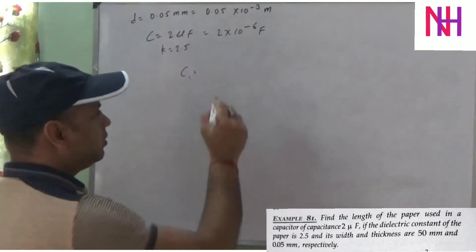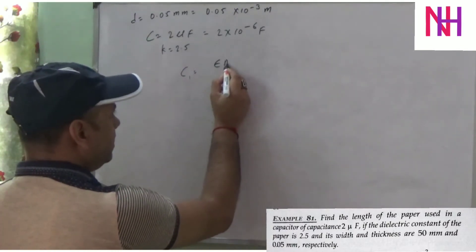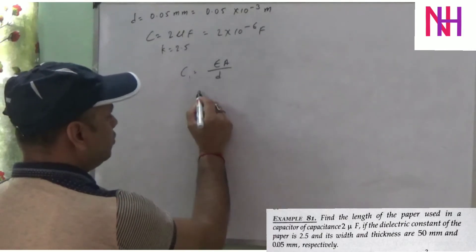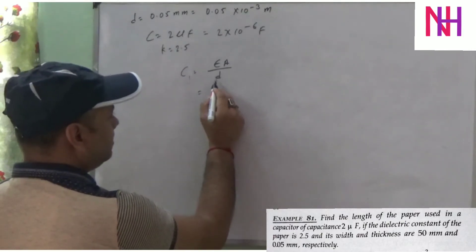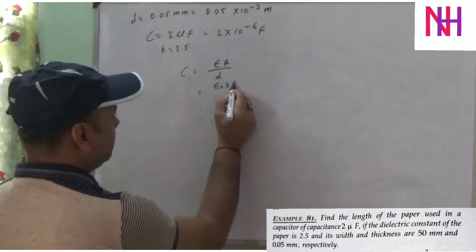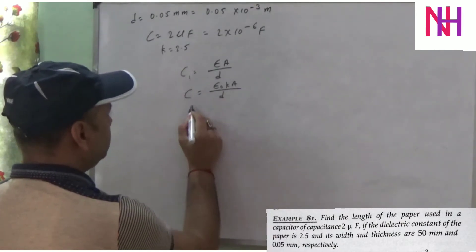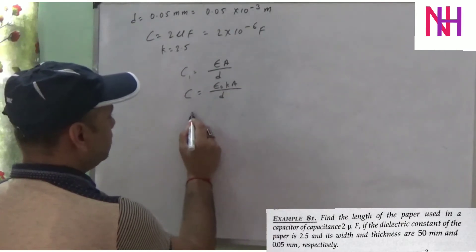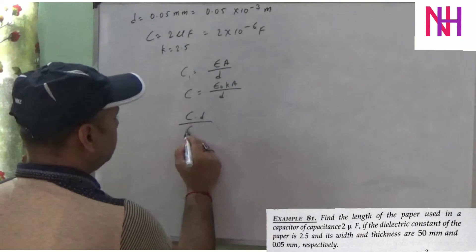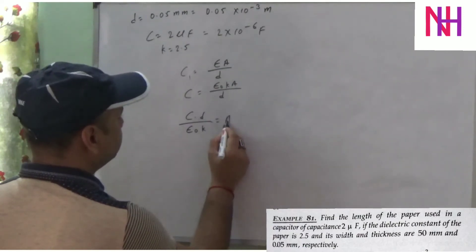The formula is C = ε₀k·A/d. Rearranging to find the area: A = C·d / (ε₀·k).